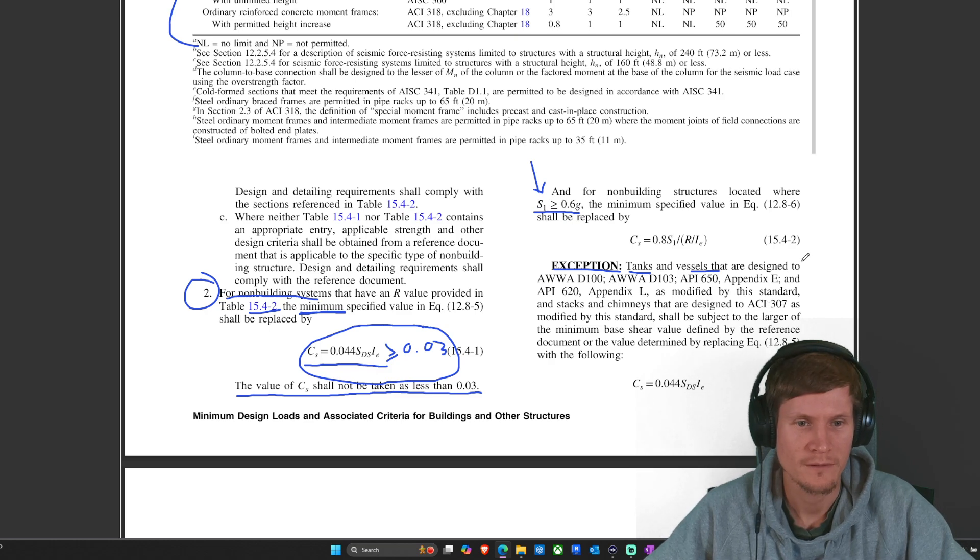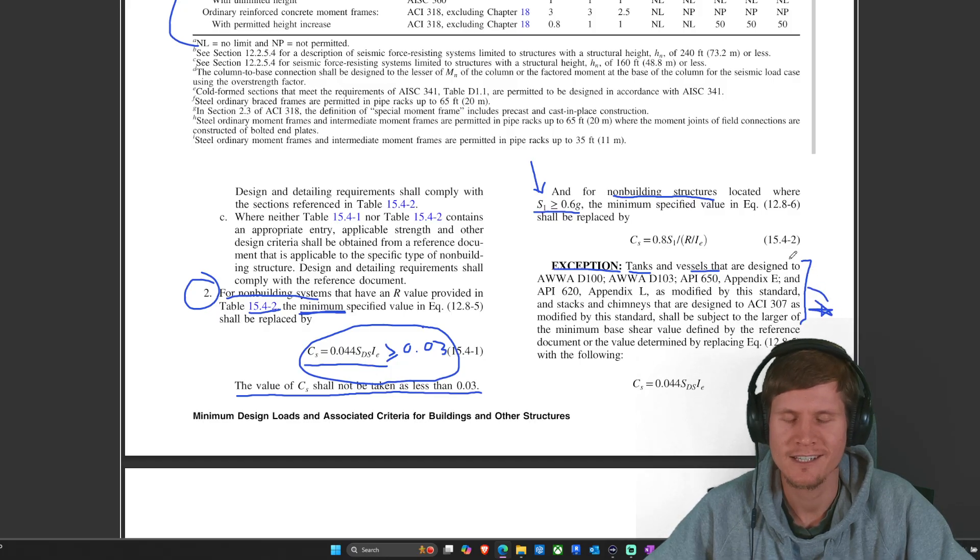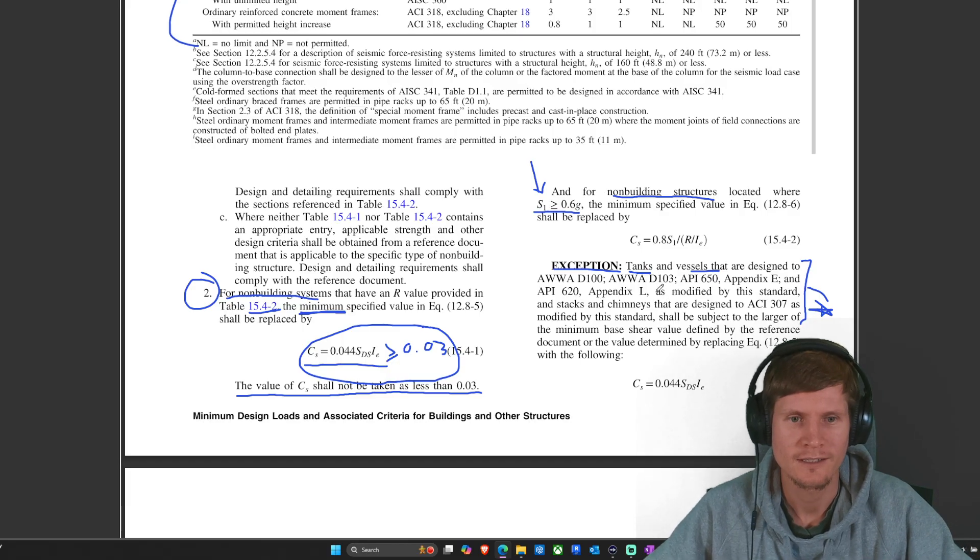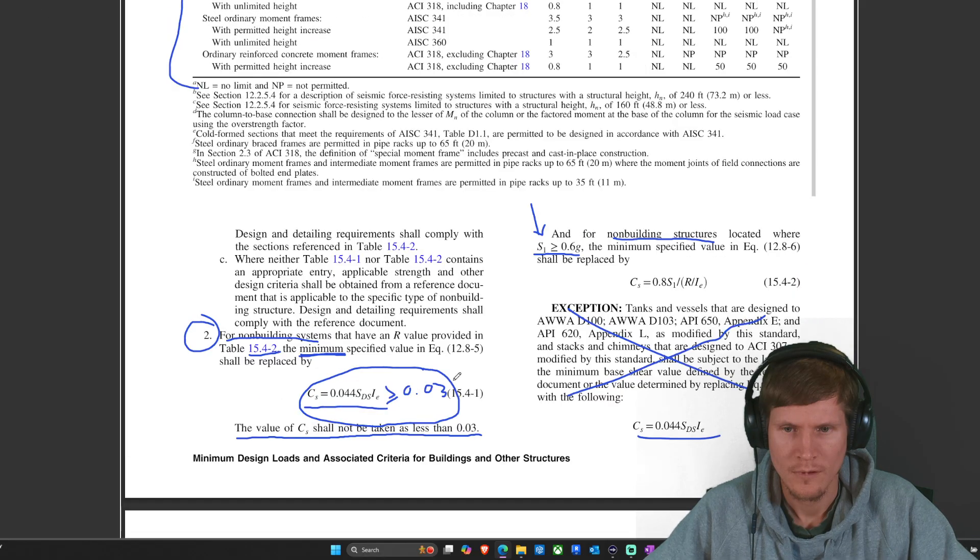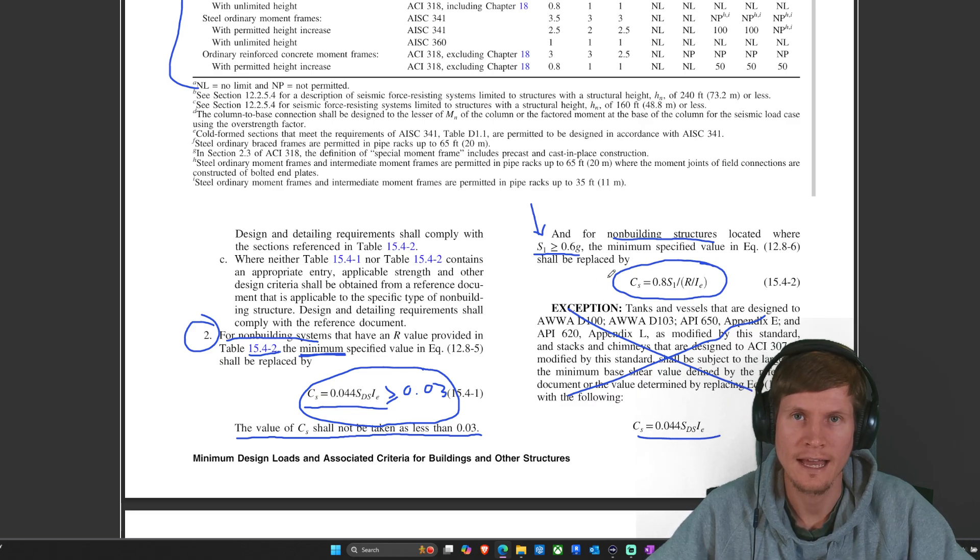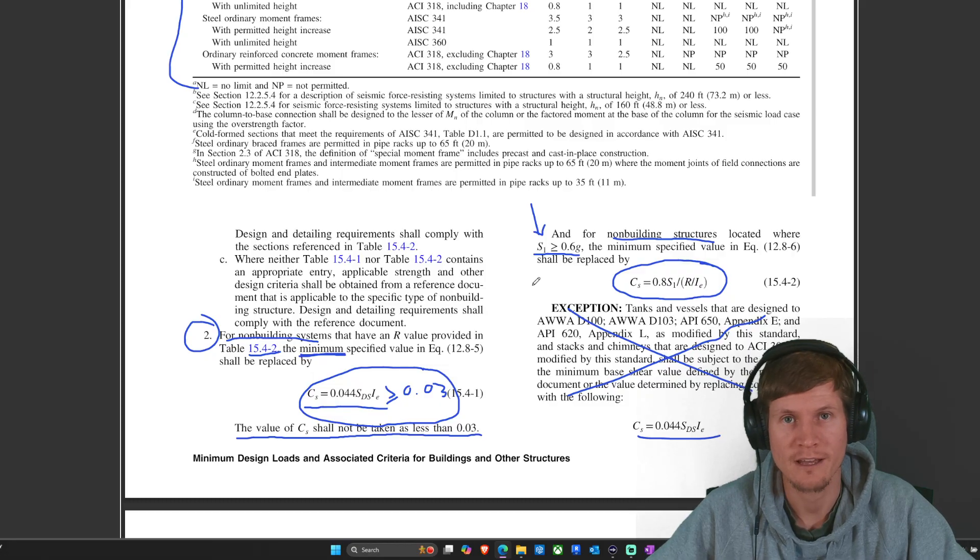Well, I'm going to stop us there. Didn't specify any of that. Didn't specify tanks, vessels, stacks, chimneys. It just said non-building structure. So I am going to pump the brakes and say this exception ain't for us. It's clearly very specific. So if they wanted to have you include this in your problem, they would specifically tell you tanks, vessels, something that just makes it crystal clear that you need to include this exception. We have just these two equations that get us a C sub S minimum or a lower bound C sub S. Let's take them back and let's run through based on the information that was provided to us.